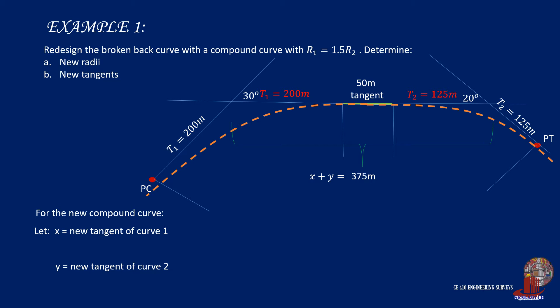Next is to determine what are the x and y values. So from the formula of tangents, we can say that x is equal to the first curve's radius times tangent of delta 1 all over 2, or that is 30 degrees all over 2.